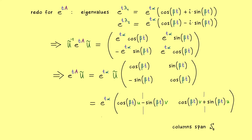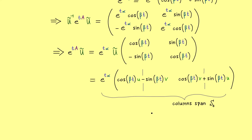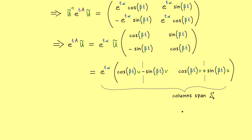These two columns multiplied by e to the power t-alpha span the whole two-dimensional real solution space. What goes in is the real part alpha and imaginary part beta of the original eigenvalue, and the real part u and imaginary part v of the eigenvector. Because of that, no complex numbers are involved at all.